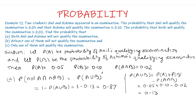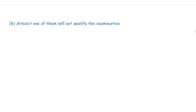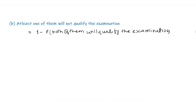Now we go to part B: at least one of them will not qualify the examination. This equals 1 minus the probability that both of them will qualify the examination, so this is equal to 1 − 0.02 = 0.98.